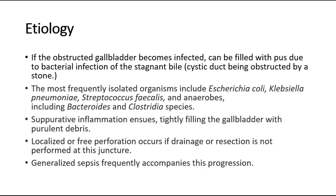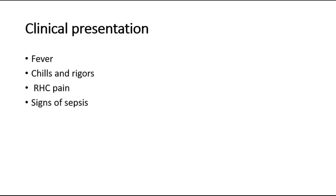Suppurative inflammation ensues, tightly filling the gallbladder with purulent debris. Localized or free perforation occurs if drainage or resection is not performed at this juncture. Generalized sepsis frequently accompanies this progression. Patients may present with fever with chills and rigors, right hypochondrium pain, and signs of sepsis.